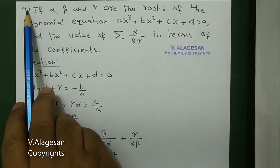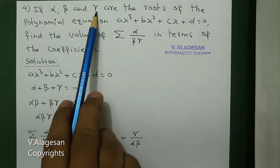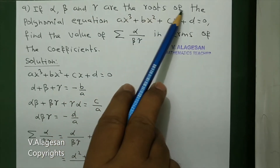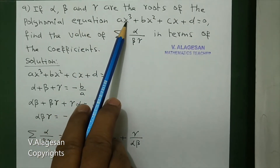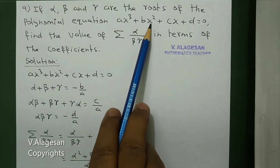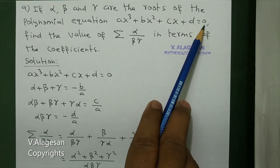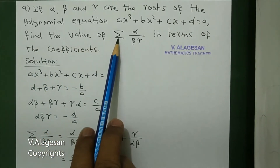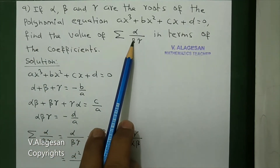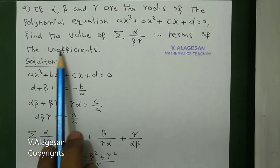Hi students, cosine number 9. If alpha, beta and gamma are the roots of the polynomial equation ax³ + bx² + cx + d = 0, find the value of summation of alpha by beta gamma in terms of the coefficients.